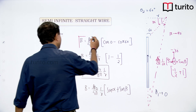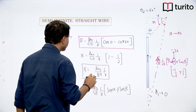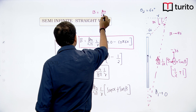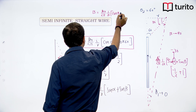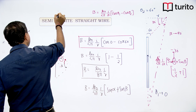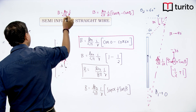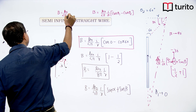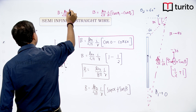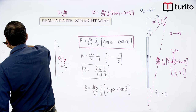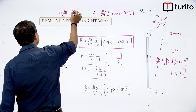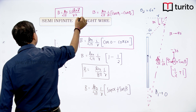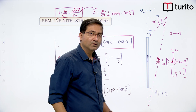Today we discussed the magnetic field produced by a straight wire and Biot-Savart's law: B = (μ₀/4π)(I/a)(cosθ₁ − cosθ₂) for a straight wire, derived using dB⃗ = (μ₀/4π)(I dL⃗ × r⃗)/r³. In the next class we will take up other current distributions. I hope you enjoyed today's class.